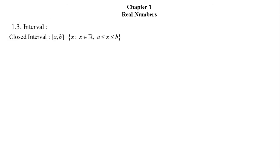Dear audience, if we consider two real numbers A and B, then the set of all real numbers between A and B, including A and B, is known as the closed interval of A and B. It is denoted by square bracket A, B and defined as: X such that X belongs to R, A less than or equal to X less than or equal to B. And this is the definition of the closed interval.